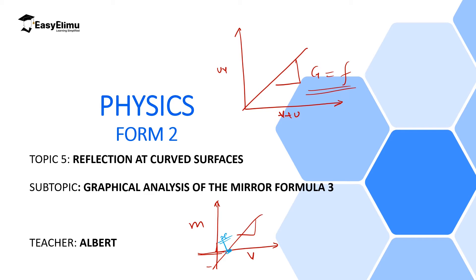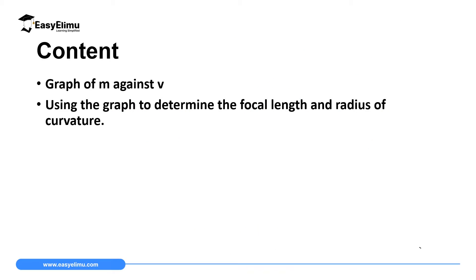So we can get the focal length in two ways from this graph: one, we get the gradient and its reciprocal gives us the focal length; and two, if we read directly the point where the line cuts the x-axis, that gives us the focal length. My name is Albert. By the end of this lesson, I expect you to be able to draw and analyze a graph of magnification against the image distance, and use it to determine the focal length and radius of curvature of the mirror.